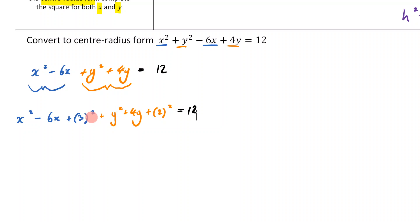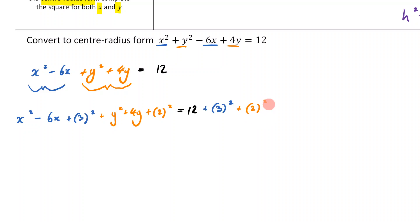This is where we have to be careful. If I'm adding 3 squared and 2 squared on the left side, I have to do the same to the other side of the equal sign — otherwise I'm changing the equation. So because I'm adding 3 squared on the left, I must add it on the right too. And because I'm adding 2 squared on the left, I must add it on the right as well. By doing the same thing to both sides, I'm keeping it balanced. That's very important.